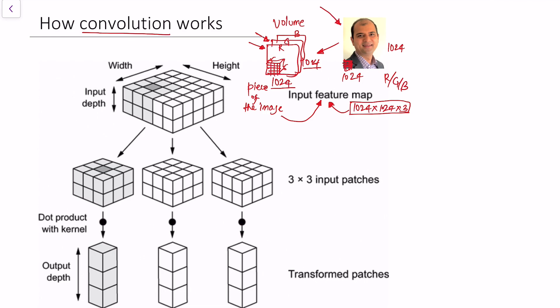This 5 by 5 by 2 input volume can be represented using a cube — a volume with 5 pixels on one side, 5 pixels on the other side, and 2 channels. This is the actual image input. The number of channels in the input is called the input depth — in this case, the input depth is 2. This is the width and this is the height of the input.